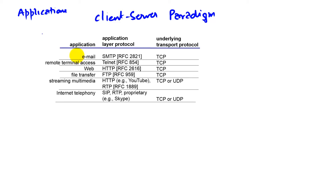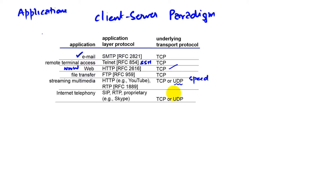Here are some applications. Email, which all of you use, uses an application layer protocol called SMTP, and the underlying protocol is TCP, which is a reliable protocol. Then we have remote access, whether it's Telnet or SSH — these use TCP. The web, which is the worldwide web, uses the HTTP transfer protocol, which is reliable TCP. File transfer uses TCP. Streaming media can be done using either UDP or TCP. The more popular version is UDP because we want speed and not so much reliability, because if you lose a few frames, the user cannot tell the difference.